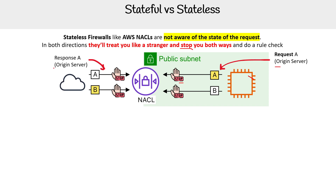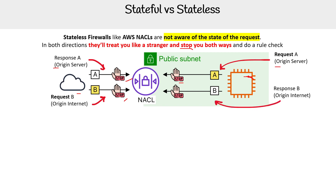Either it passes the rule or it doesn't, but let's imagine it is allowed to go out. On the internet side, it's going to send a response — it knows the origin is the server over here. But it's coming back the other way with a response to that specific request, and the NACL is going to say stop: we don't know who you are. Even if you're from the originating server, we're going to check you. Anyone coming or leaving gets checked. Now imagine a request coming from the internet trying to reach the EC2 instance — it gets stopped. Then the EC2 instance sends back a response, and that gets stopped too. So it stops in all directions. That's what makes it stateless.